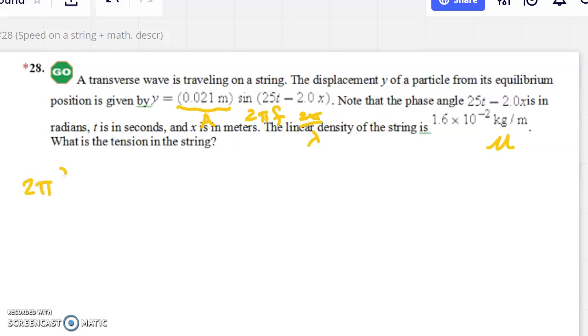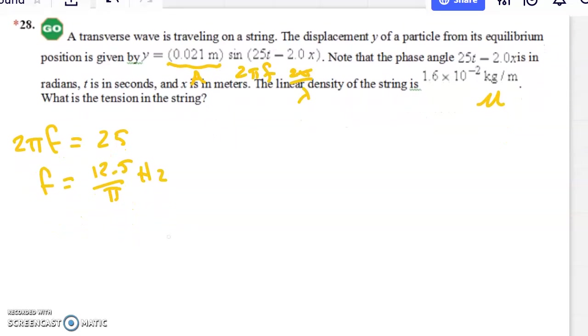Well, one thing I can do then is I can say, well, if two pi f is equal to 25, well, that means the frequency must be 12.5 over pi. You could simplify that, but you'll see that would be a waste of time in a second here. And then I can say that two, remember, the negative talks about the wave traveling to the right.